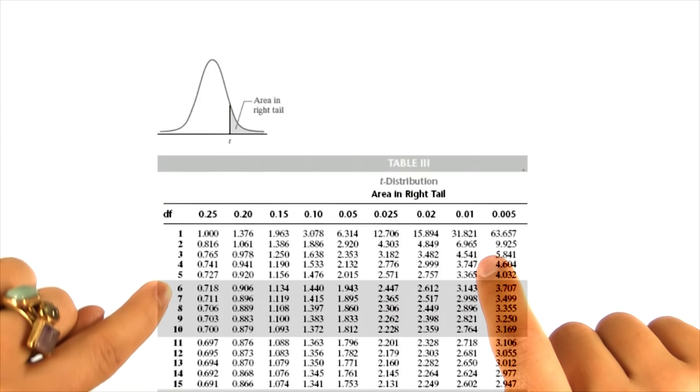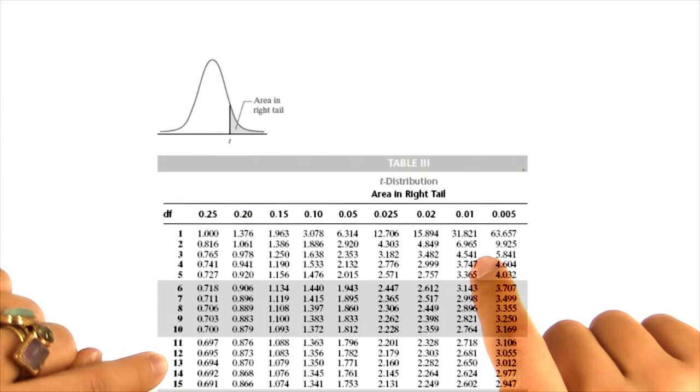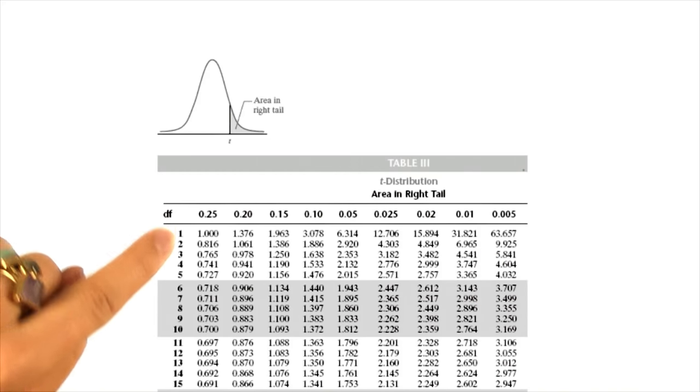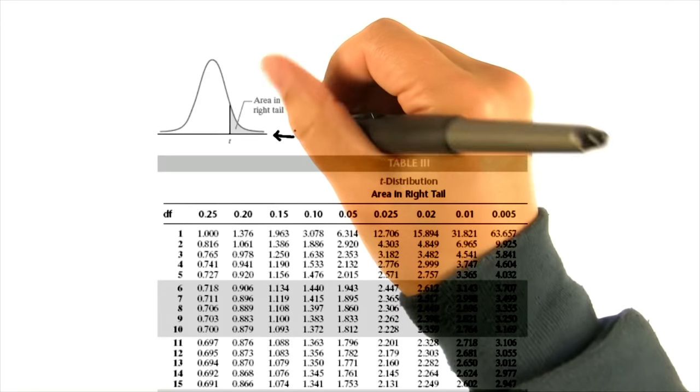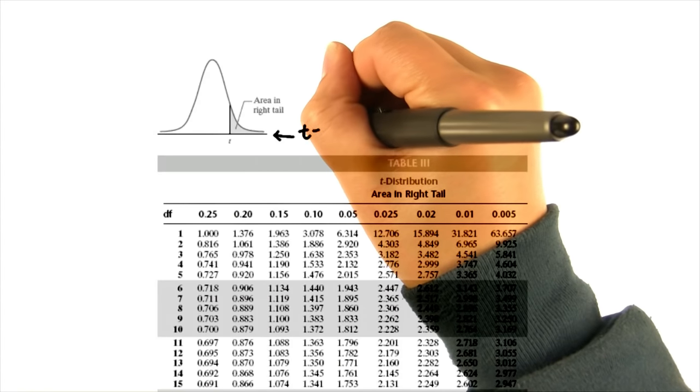On the left, we have the degrees of freedom. Remember I said that t distributions are defined by their degrees of freedom. And then on the x-axis of the t distribution, we have the t values instead of the z values.